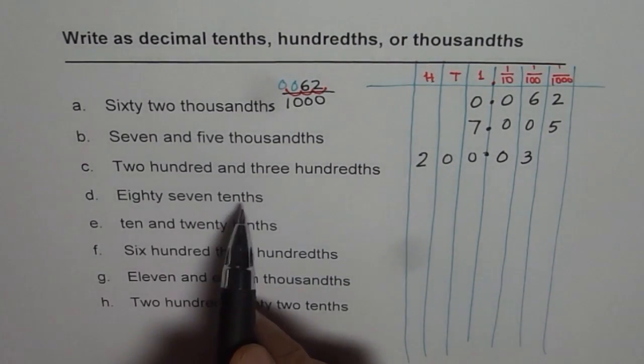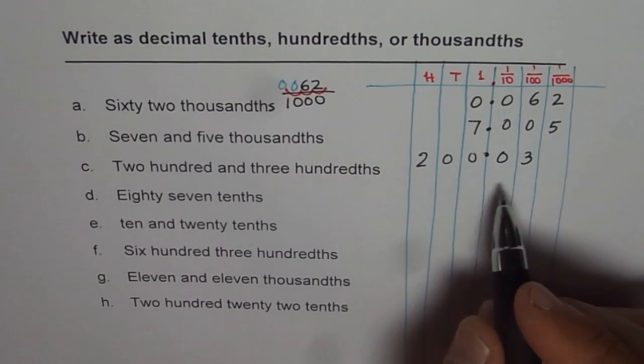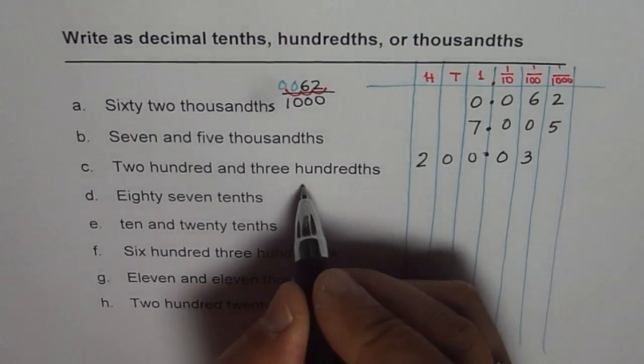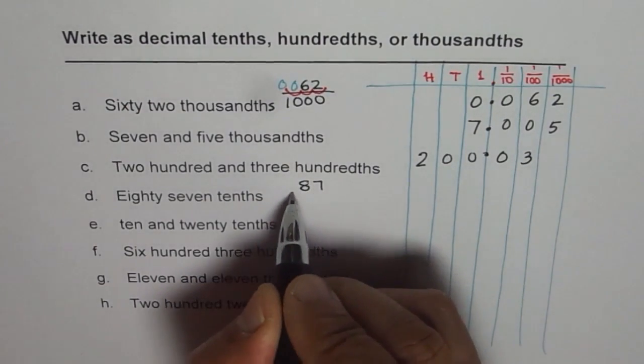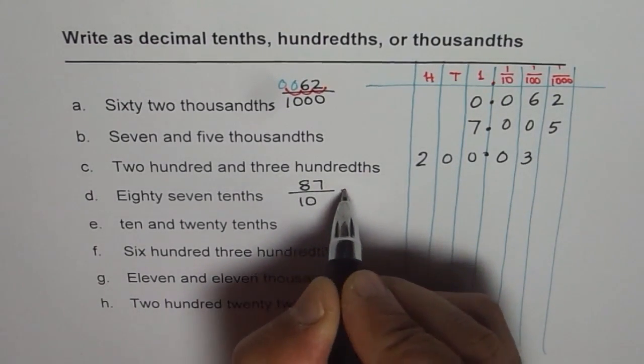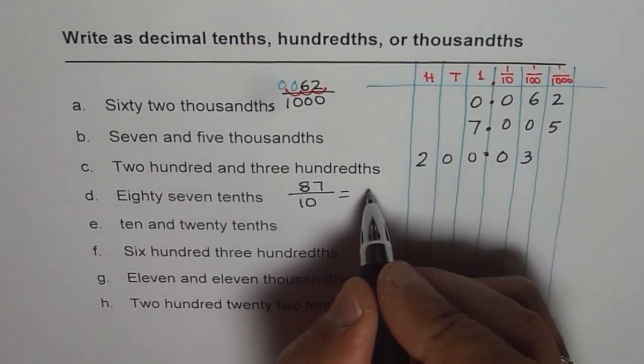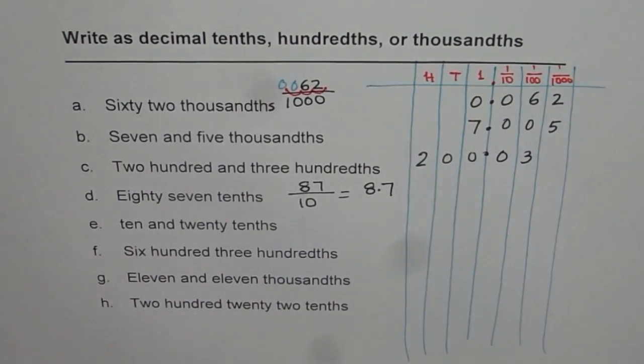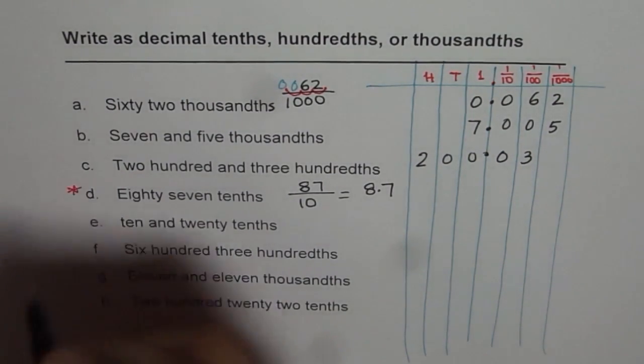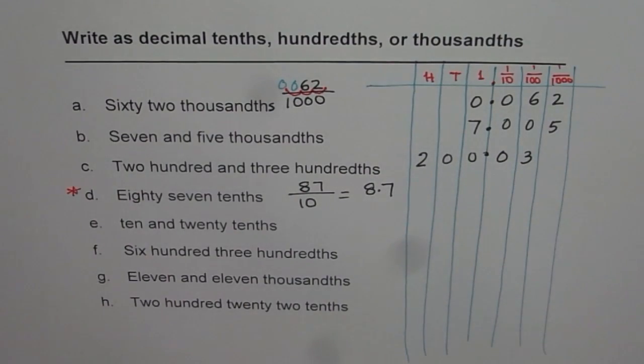Eighty-seven tenths. Now eighty-seven in tenths place it is kind of like this. Eighty-seven tenths. So if you divide eighty-seven by ten you get eight point seven. It is kind of tricky. Let me put a star here. So you go through this question once again.